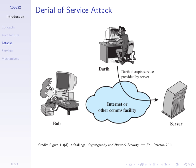A denial-of-service attack: Darth sends many packets — a large amount of data — to a web server, overloading it. Once the server is overloaded, no one else can access it, including Bob who needs it for his normal work. The normal user is denied access to the server. This is an attack on the availability of the system.